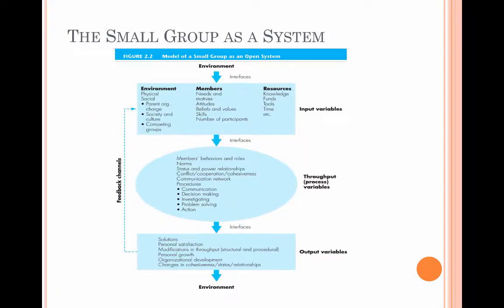Here's an illustration from the textbook that shows how a small group functions in an open system. It has examples of the different kinds of things that qualify as inputs, throughputs, and outputs, with a line from the outputs back to the inputs to show how they feed back through the system. And of course, the environment is always there and always has an impact on the group.